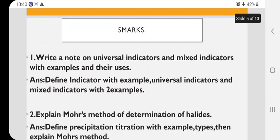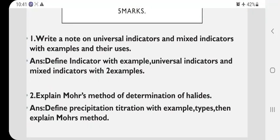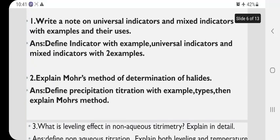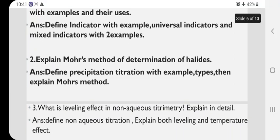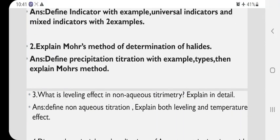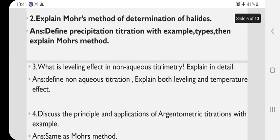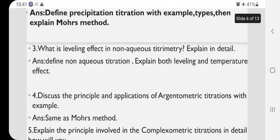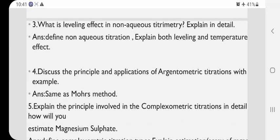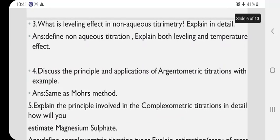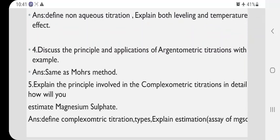Next, we move for the five-mark questions. Write a note on universal indicators and mixed indicators with example. Define these indicators and write the applications and examples. Explain Mohr's method of determination of the halides. Mohr's method is very important. What is leveling effect in non-aqueous titration? Then discuss the principle and applications of the argentometric titration, that is silver chloride. Same as Mohr's method.